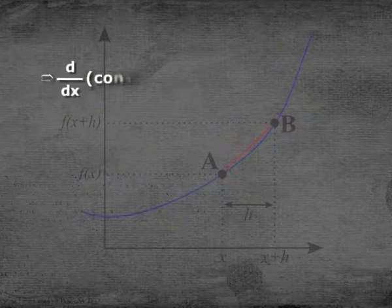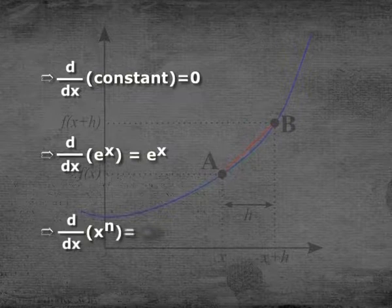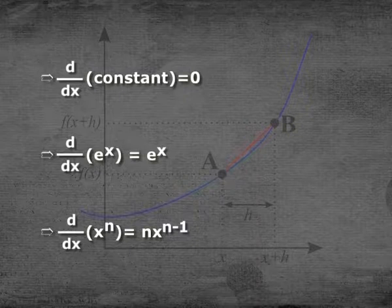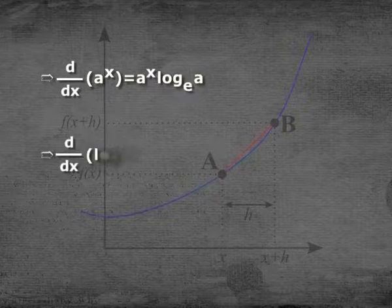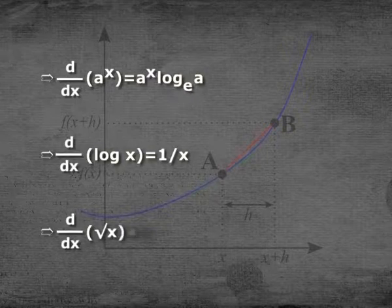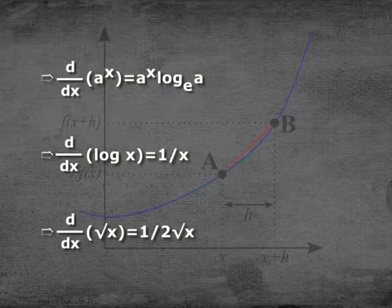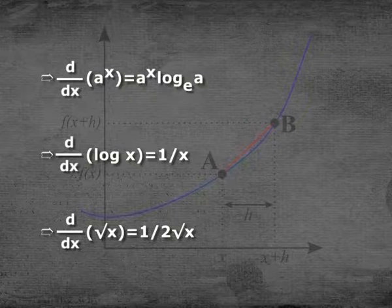Some standard results of differentiation: d/dx of any constant = 0; d/dx of eˣ = eˣ; d/dx of xⁿ = n·xⁿ⁻¹; d/dx of aˣ = aˣ·logₑ(a); d/dx of log(x) = 1/x; d/dx of √x = 1/(2√x).